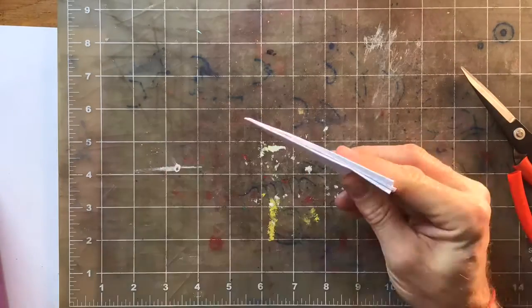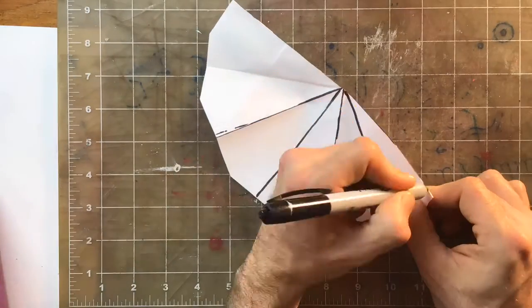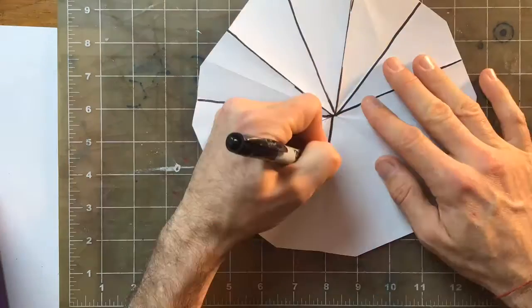...snowflake, like a paper snowflake, because that gives me 12 sections that are equal, and I marked those out with a Sharpie.